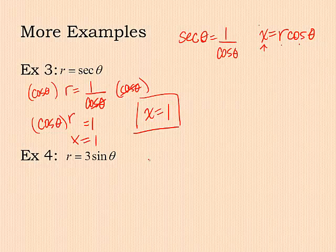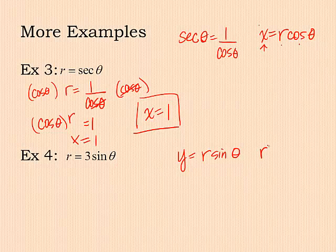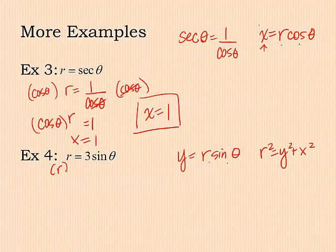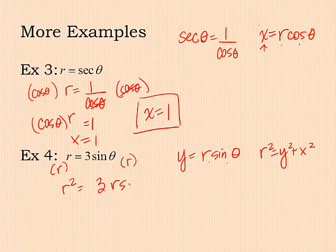Example four, r equals three sine of theta. Different things to think about. We know we have a conversion that says y equals r sine of theta. So we have the sine in there. We also know that r squared equals y squared plus x squared. So the first thing I want to do is I need to get it looking like r times the sine of theta. I don't have an r over here on the right. So what I want to do is make that happen. I can do it to both sides. Multiply by r on both sides of your equation. So I'll have r squared equals three r sine of theta.